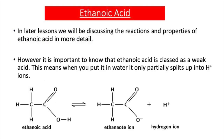When we study acids, bases and salts in later lessons, we'll look at ethanoic acid in more detail. However, it's important to know that ethanoic acid is classed as a weak acid. When put in water, it only partially splits up into H+ ions. Strong acids such as hydrochloric acid and sulfuric acid totally split up into H+ ions in water — the more H+ ions, the lower the pH and the more acidic. Ethanoic acid only partially splits up, so there are fewer H+ ions in solution, and therefore it is a weaker acid.